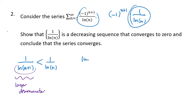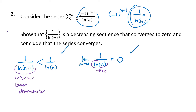We also need to show that the limit as n goes to infinity of 1 over the natural log of n goes to zero. As we take natural logs of larger numbers we get larger results, so the denominator goes to infinity and the whole fraction goes to zero. So by the alternating series test, this series converges.